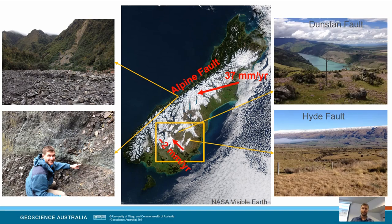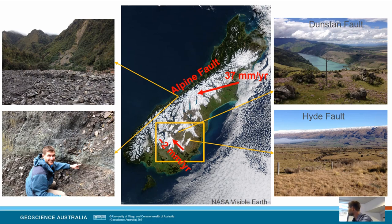The main area I'll be talking about today is the Otago region, east of the plate boundary in the southeastern part of the South Island. Within that area you can see a series of snow-capped ranges that have been uplifted on a series of parallel northeast-trending reverse faults — and those are the faults I'm primarily going to be talking about today.